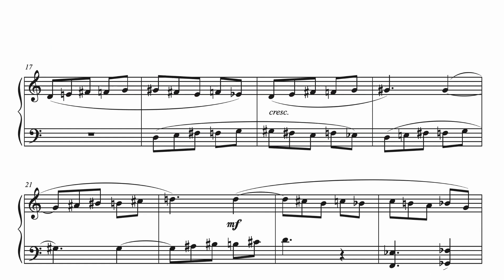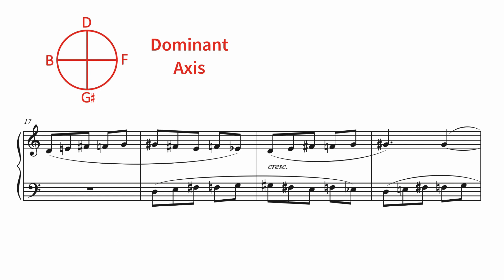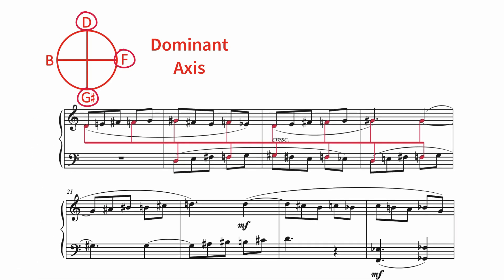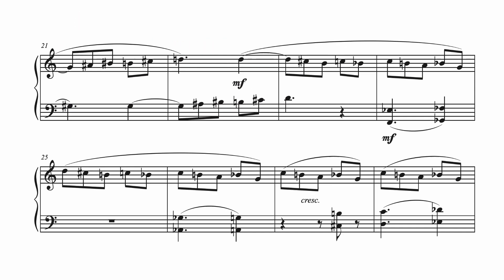Let's bring in a diagram of the dominant axis. The D, F, and G sharp pitches are all here in metrically strong locations. In measure 21, Bartók transposes motive ZZ up a tritone, and the pitch B is now apparent to complete the dominant axis.